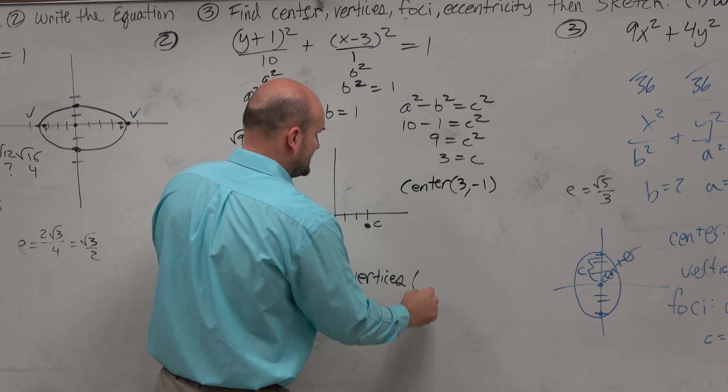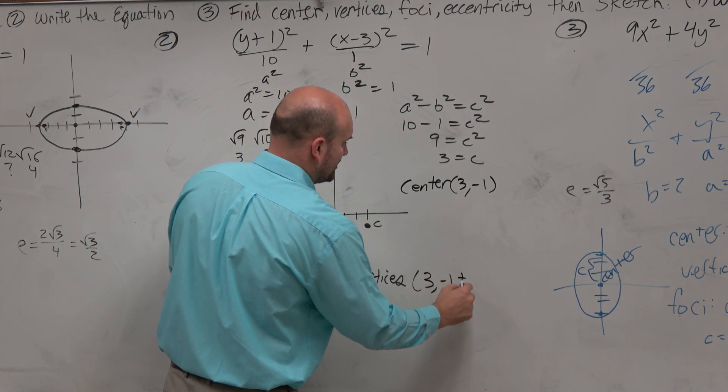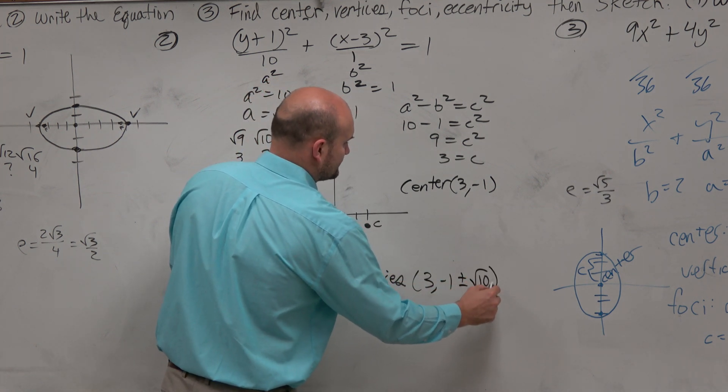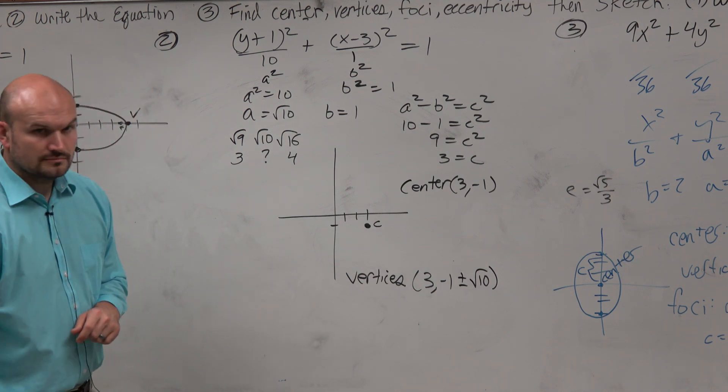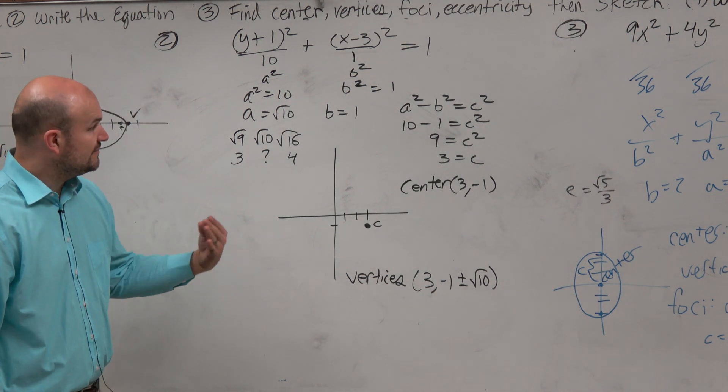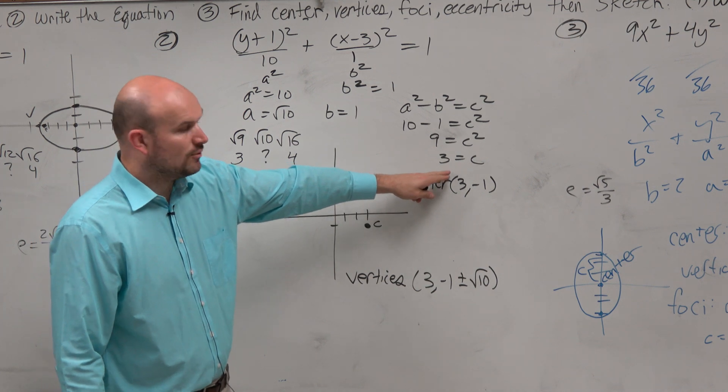So the vertices are going to be 3, negative 1, plus or minus the square root of 10. Now the foci is going to be c away.